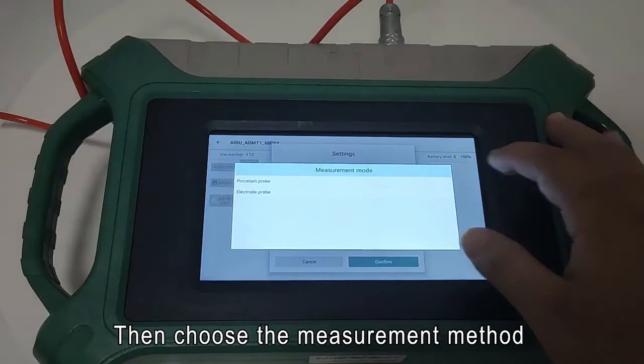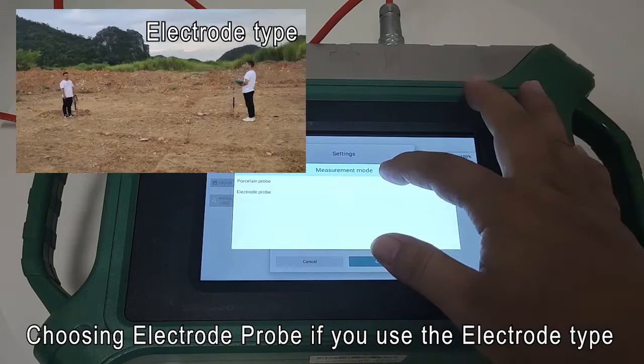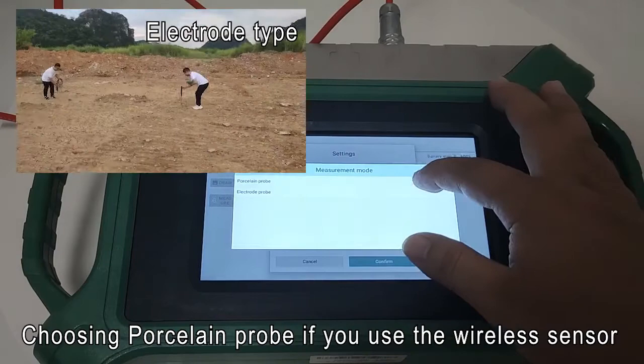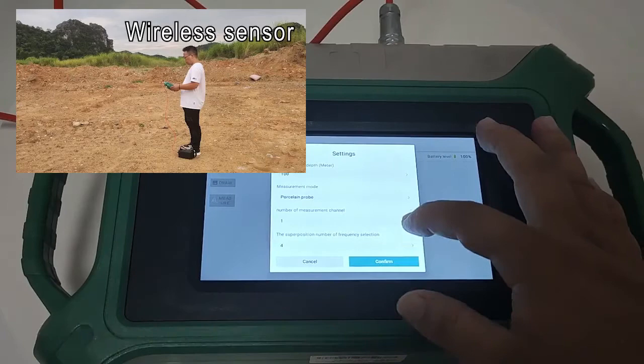Then choose the measurement method. Choose the electrode probe if you use the electrode type. Choose the porcelain probe if you use the wireless sensor. This time we use wireless sensor, so choose the first one.